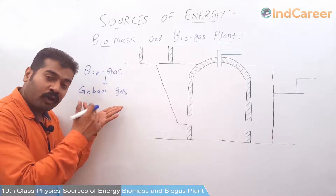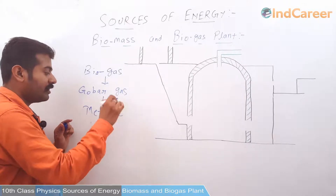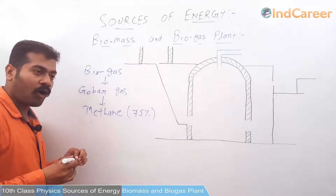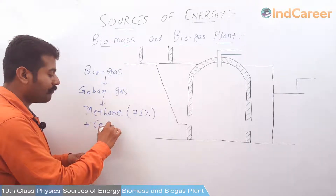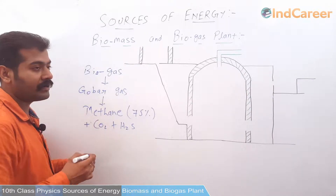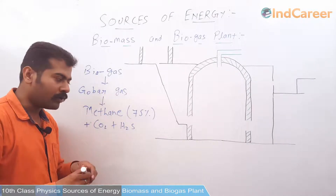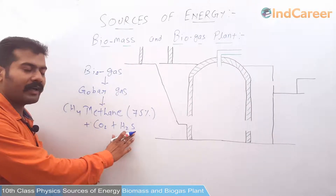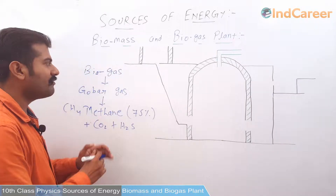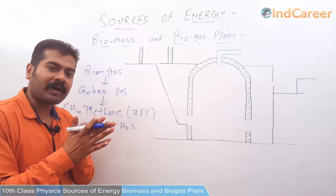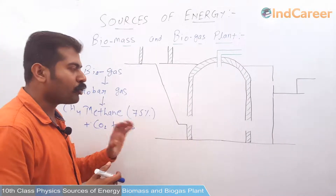In gobergas or biogas, the main constituent is methane. Methane is the result of biomass. Now, how can we produce biogas so that we can use it for various purposes or use it as a fuel? Let us see how we can produce biogas.